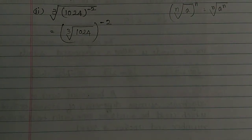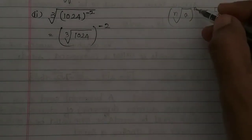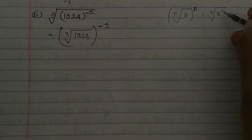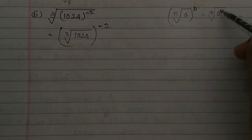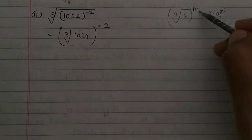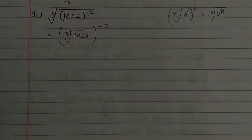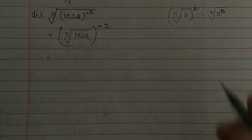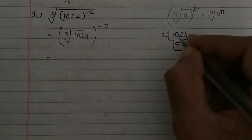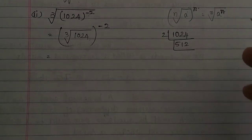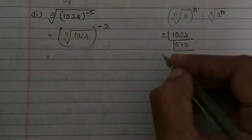We use the nth root of a to the power n rule. First, we take the LCM of 1024. 1024 is actually 2 to the power 10. We divide by 2 ten times to get 1024. So 1024 = 2 × 2 × 2 × 2 × 2 × 2 × 2 × 2 × 2 × 2, which is ten 2s.